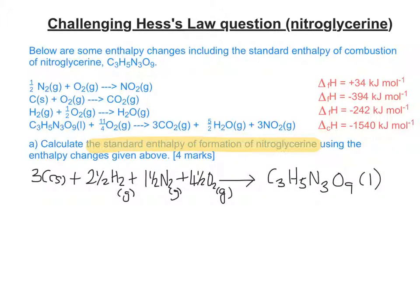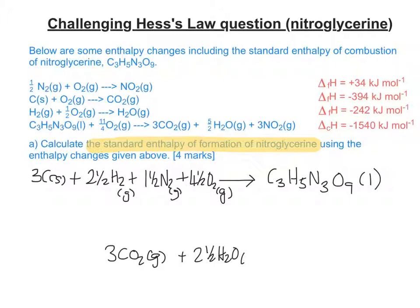Along the bottom we can put 3 CO₂. We can put 2.5 H₂O — it's meant to be 2.5 H₂O there — and it's given to us in gaseous form, so I'm putting it in gaseous form in my equation. And we need 3 NO₂, again in gaseous form.